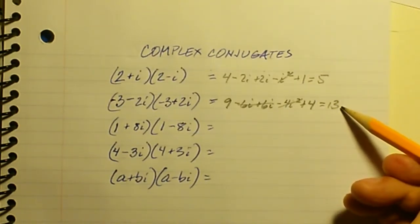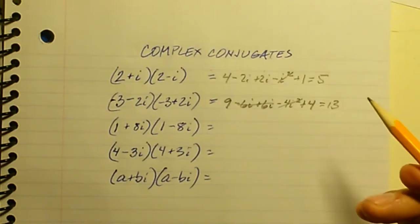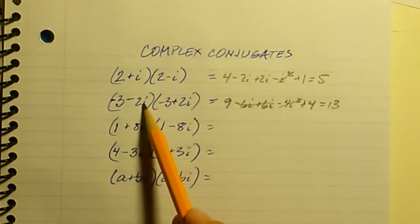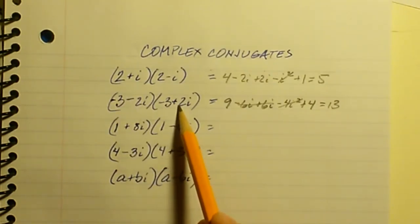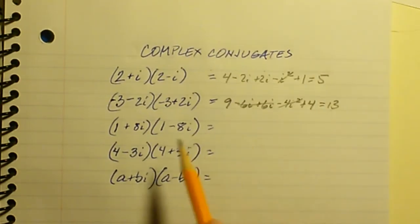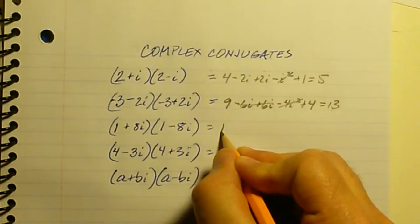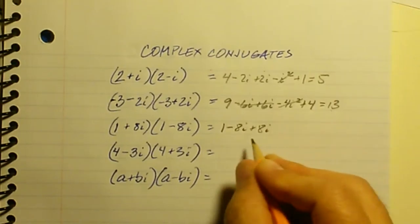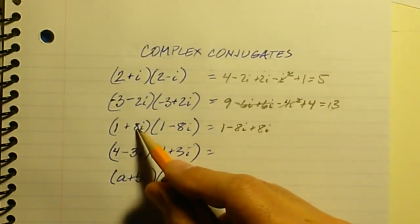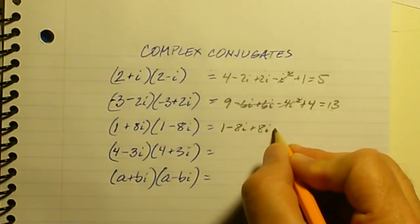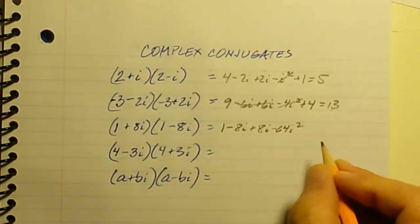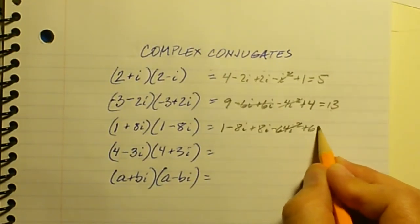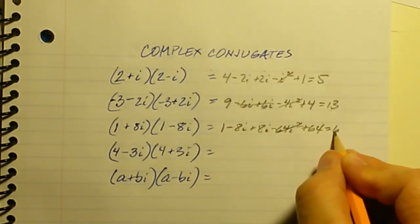In both cases we ended up with a real number — there's no imaginary part. That's what's cool about complex conjugates: you take a complex number with an imaginary component, multiply it times its conjugate, and it comes out real. For 1 plus 8i times 1 minus 8i: 1 times 1 is 1, the middle terms cancel, and 8i times negative 8i is minus 64i squared, which is plus 64. So I get 1 plus 64, which is 65.